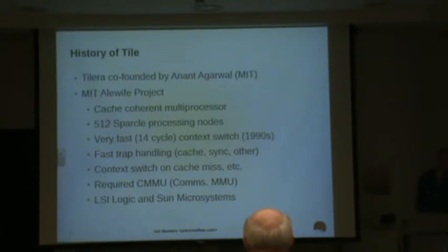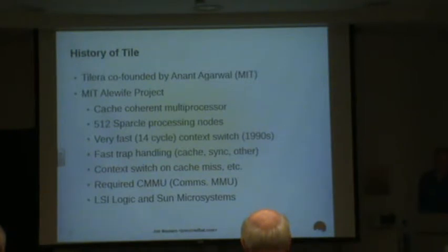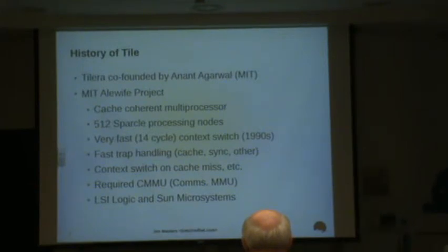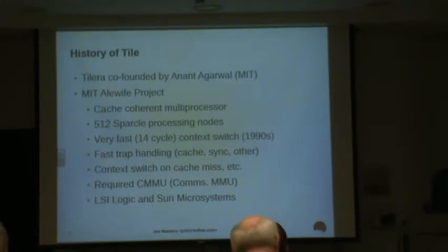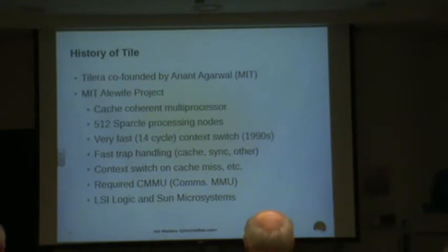This is in the 90s — 14-cycle context switches in the early 90s. And what SPARCLE would do that was interesting was it would context switch — switch from one task to another on all kinds of events, even like a cache miss. Okay, switch to something else, right? Well, that cache miss gets fixed up, and then it'll come back and do what it was doing before.